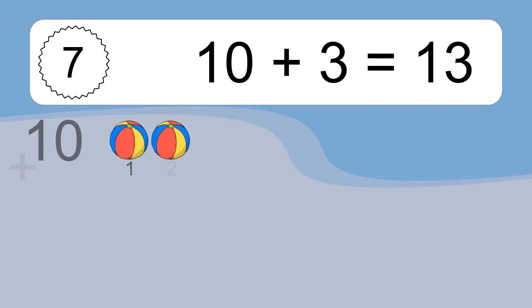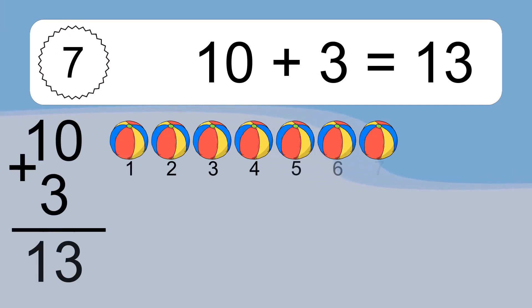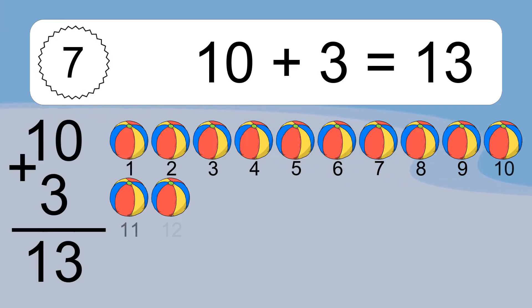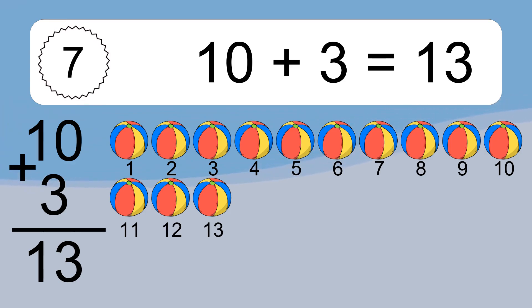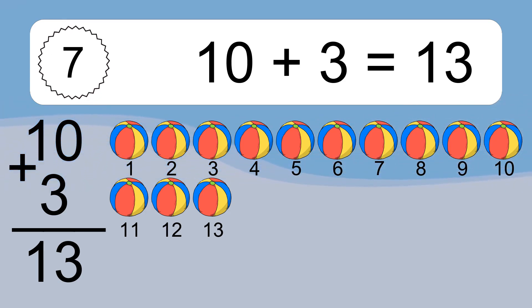10 plus 3 equals 13. Let's count it: 1, 2, 3, 4, 5, 6, 7, 8, 9, 10, 11, 12, 13.